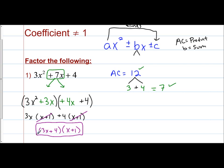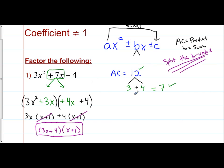And there is our factored expression. The idea is to create 4 terms from 3 terms by splitting the b value — that's the only one you change. You don't change ax² and you don't change c. You split the b based on what you find, and then factor by grouping from there. So we can see how to use the AC method from this example. Let's try it out on the next problem.